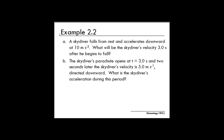In this video, we'll be solving Example 2.2, which comes in two parts. Part A says a skydiver falls from rest and accelerates downward at 10 meters per second squared. What will the skydiver's velocity be 3 seconds after he begins to fall? Part B says the skydiver's parachute opens at t equals 3 seconds, and 2 seconds later the skydiver's velocity is 5 meters per second directed downward. What is the skydiver's acceleration during this period?